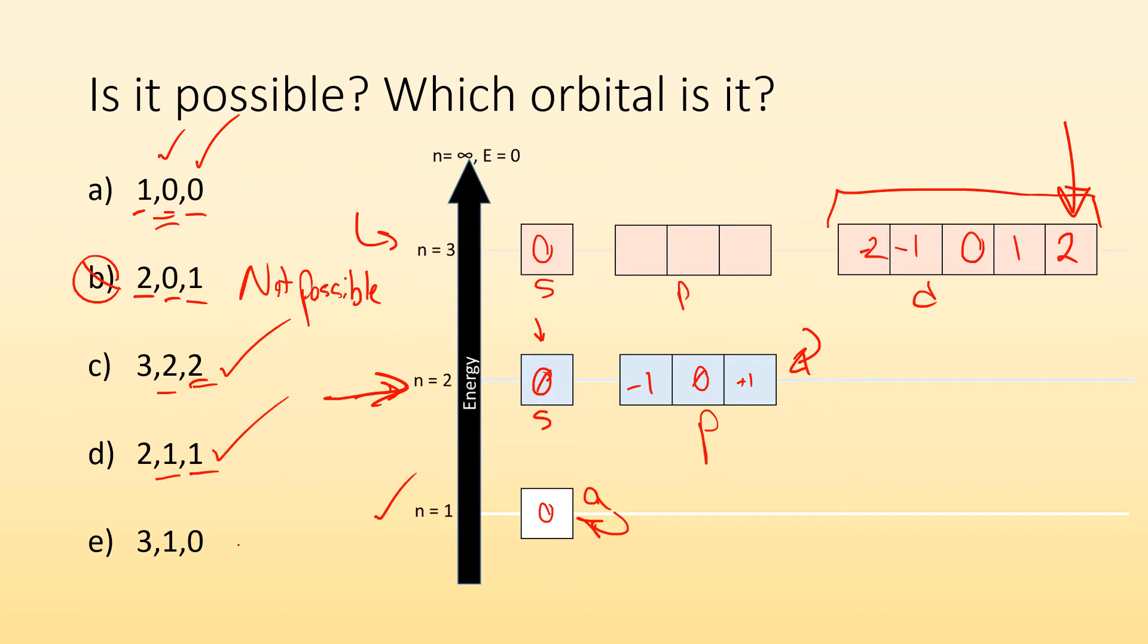All right, last but not least, three comma one comma zero. Is that possible? Well, yeah. Let's see. Third energy level. Cool. One brings me to the P sublevel. That works. Is there a zero in there? There sure is. That's the one right in the middle. It's talking about that orbital.